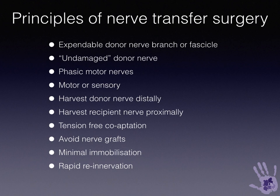The recovery is very fast. The principle is effectively an expendable donor nerve branch or fascicle, and this is because there's significant redundancy in a nerve between motor branch points. A fascicle can be taken without sacrificing completely the function of the donor.